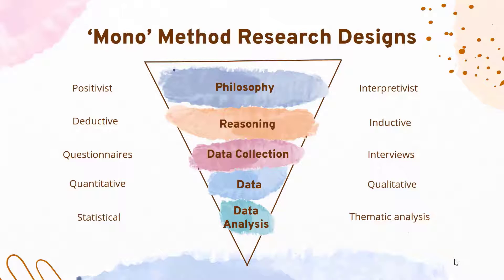Let's explore mono method research design. If we consider there to be two poles at either end of the spectrum, based on a positivist philosophy or an interpretivist philosophy, we could follow either of these paths. If we were conducting research using a positivist philosophy, we would logically employ deductive reasoning, and we might utilise questionnaires as our data collection tool in order to collect quantitative data, and then conduct data analysis through statistical analysis.